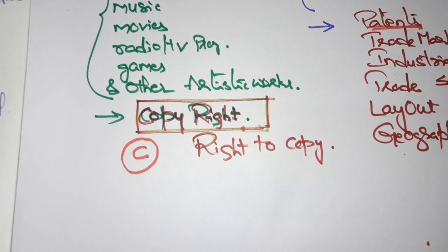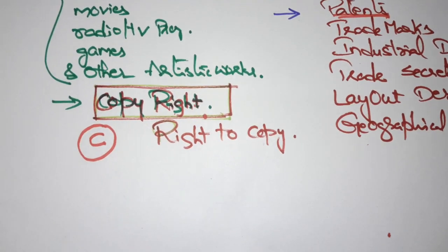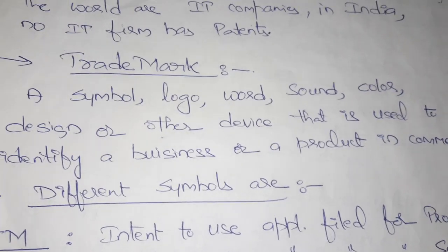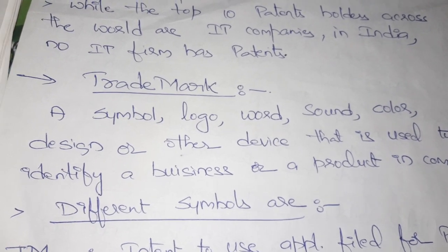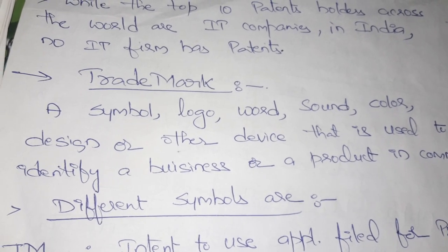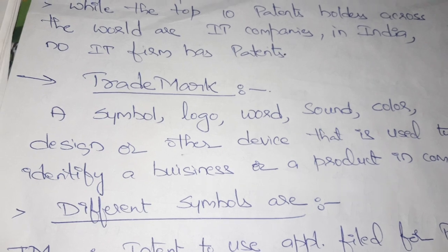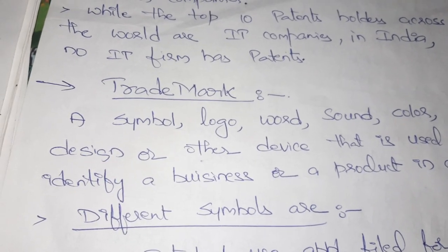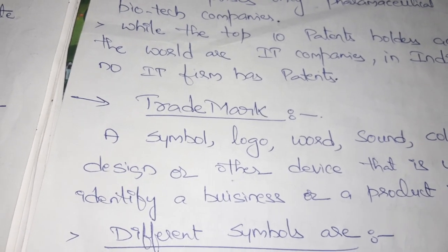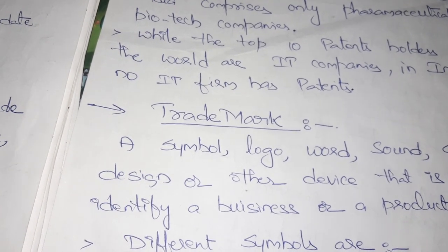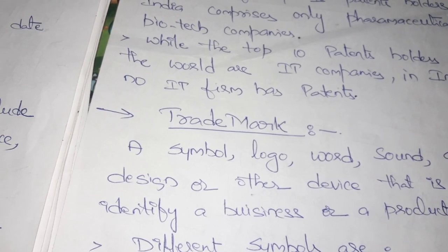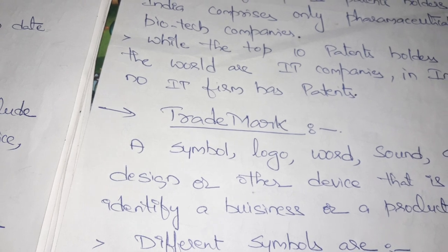Next we will see trademarks. A trademark is a symbol, logo, word, sound, color, design, or other device used to identify a business or product in commerce. For example, symbols like the LG symbol — this logo, this word, represents a trademark.